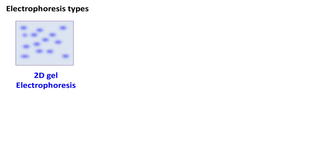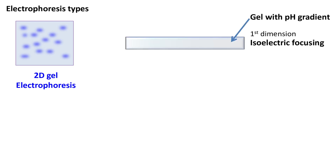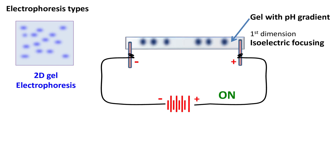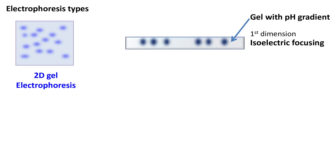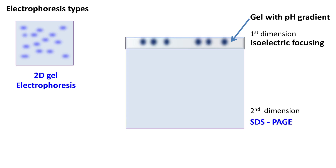2D gel electrophoresis is widely used for the separation of proteins. In the first step, the proteins are separated by a technique called isoelectric focusing, in which the proteins are resolved in a gel with a pH gradient. The separation of proteins occurs on the basis of their isoelectric pH. In the next step, the gel used in isoelectric focusing is used with an SDS-PAGE gel to carry out electrophoresis in the second dimension.